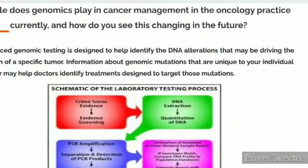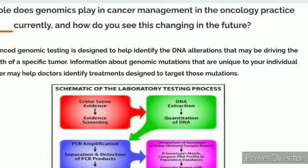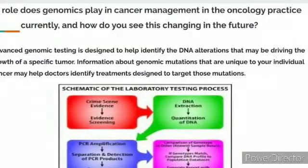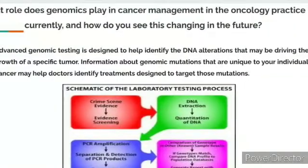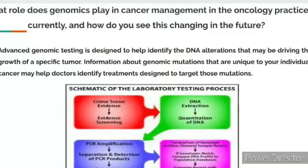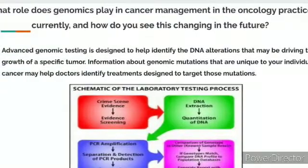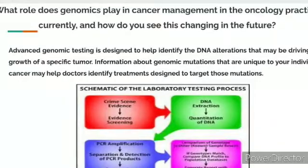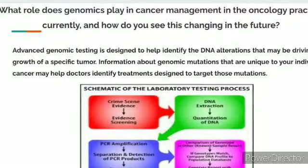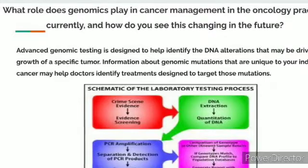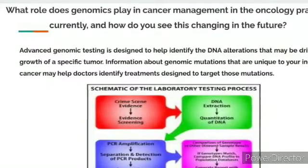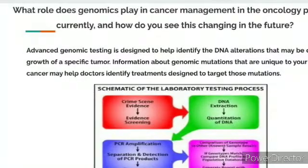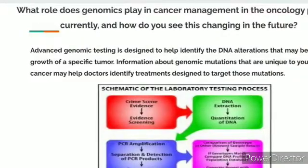What role does genomics play in cancer management in oncology practice currently, and how do we see these changes in the future? In my humble opinion, genomic testing is designed to help us detect the DNA changes that can develop and start to grow into a specific tumor. These mutations are unique to each individual and to the type of cancer they develop. It helps us, as doctors, to identify and design a very specific treatment to target the mutation in the DNA that is developing the cancer. As you can see in the graphic, we can perform amplification with PCR — a laboratory technique — and then identify a specific drug that can target that mutation in the DNA transforming into cancer.